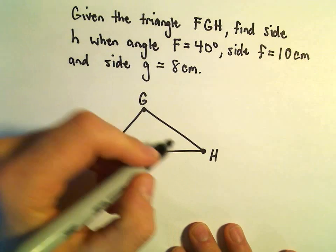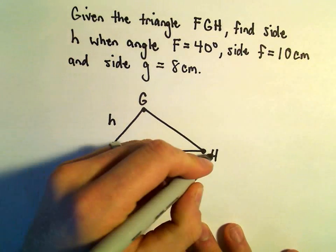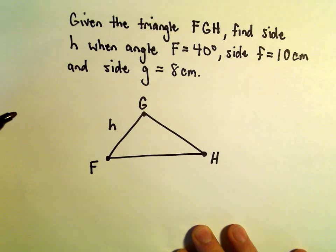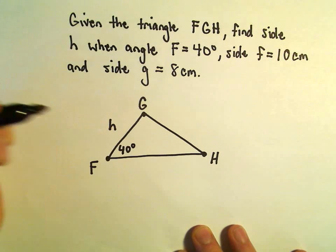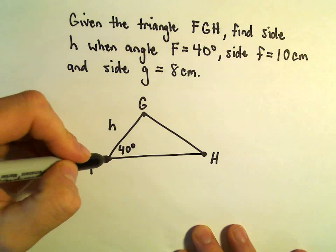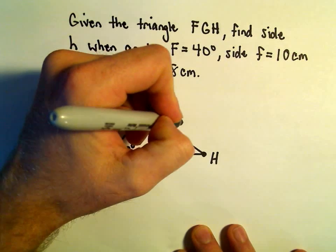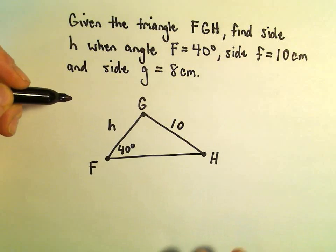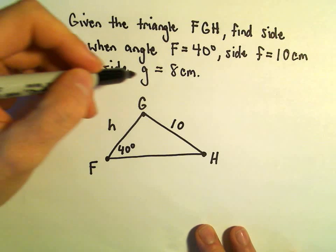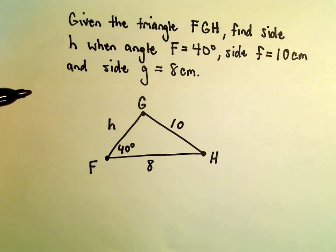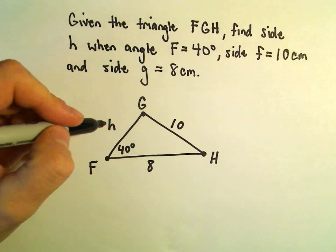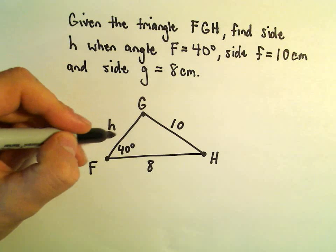Okay, we want to find the side length little h, so that'll be opposite the angle H. We're told that angle F has a measure of 40 degrees, and the side little f measures 10 centimeters. We're also told that the side little g equals 8. Okay, so we're trying to find H, so we're going to do a couple things here again first.